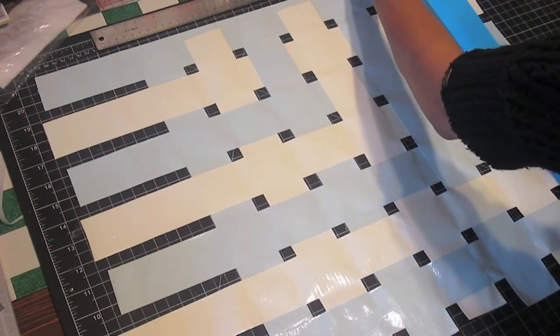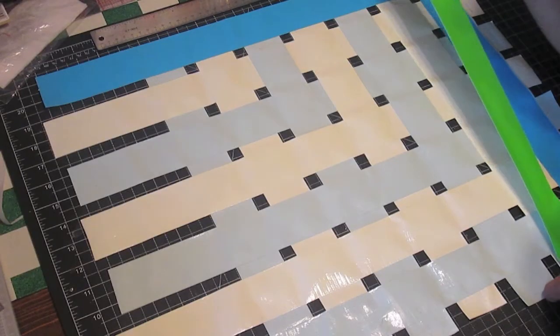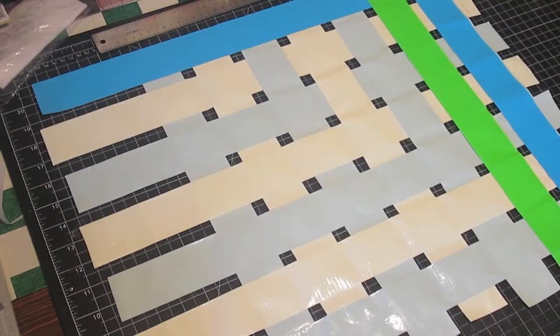Place duct tape strips on the back side, matching the same color pattern if you got a little fancy. Be sure to line up the edges as best as possible.